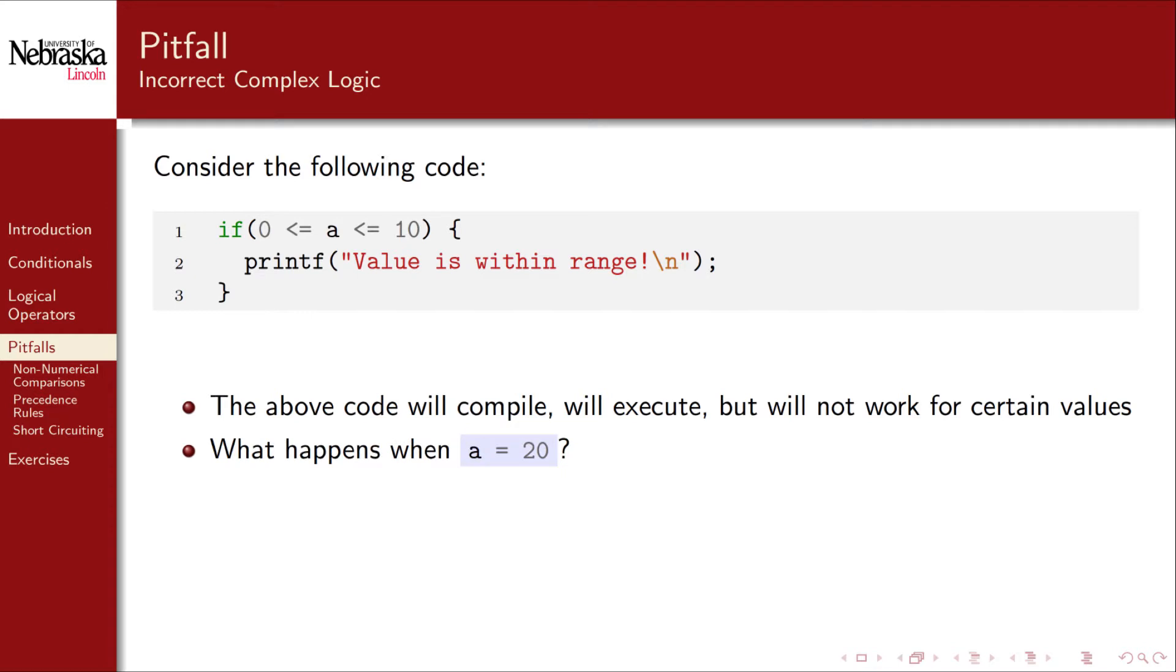Let's walk through and see what happens in this code when the value stored in A is 20. The first comparison is evaluated and since 0 is less than or equal to 20 it evaluates to true. However in many C implementations this means that it will result in 1.